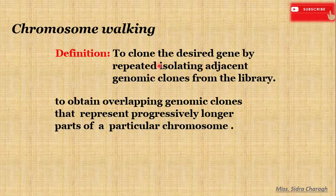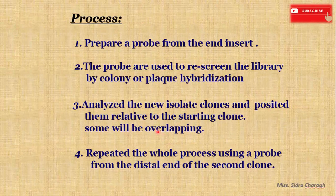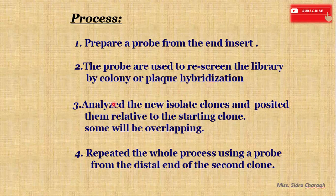Next is chromosome walking. Chromosome walking is a method of positional cloning used to find, isolate, and clone a particular allele in a gene library. We obtain overlapping genomic clones that represent progressively longer parts of a particular chromosome. We perform chromosomal walking by preparing a probe from the end of an insert, and then those probes are used to rescreen the entire library by colony or plaque hybridization. We analyze the newly isolated clones and position them relative to the starting clone — some will be overlapping. Then we repeat the whole process using a probe from the distal end of the second clone.